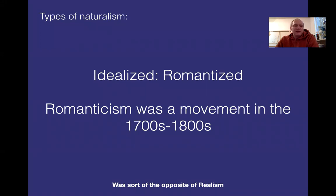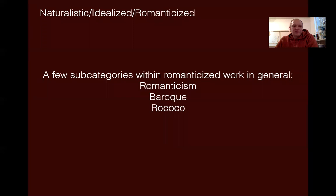This is taking idealization to a different level. It was a movement mostly in the 1700s and 1800s, and you can think of it sort of as the opposite of realism. Idealization was all about making things perfect, as we learned. And within that there is also romanticization — there's romanticism, there's the Baroque, and there's Rococo.